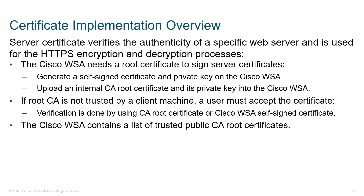As far as implementing certificates: the server certificate verifies the authenticity of a specific web server, like Cisco.com or Gmail.com, and it's used for the HTTPS encryption and decryption process. At the beginning of the session there's an SSL handshake — what cipher do you support, what encryption, what hashing, what key generation? Both sides need to agree, and both sides need to accept the root certificate. If you build your own CA server, you can use group policy in Active Directory to tell devices to trust that root certificate. Once they do, we can generate our own certificates, put that private key on the WSA, and the WSA has the ability to intercept all communications.